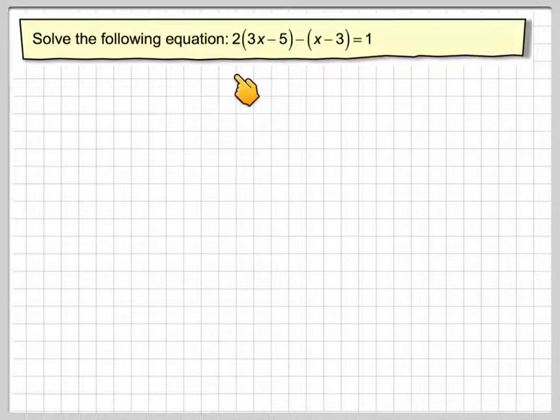Right, so we're going to now solve the equation 2 brackets 3x minus 5 minus brackets x minus 3 is equal to 1.